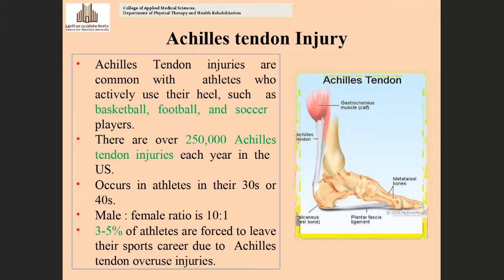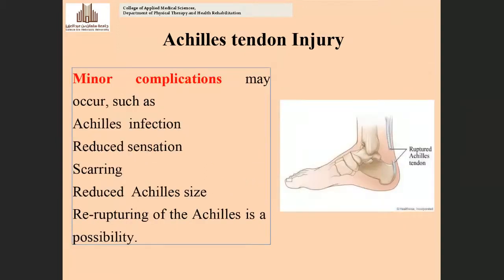There are over 250,000 Achilles tendon injuries each year in the US. These injuries occur mostly in athletes in their thirties or forties. The male-to-female ratio is 10:1, so males are more prone to these injuries. Around 3–5% of athletes leave their sports activities due to these injuries.